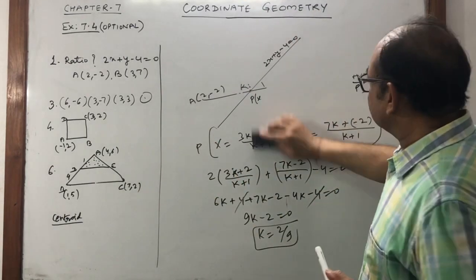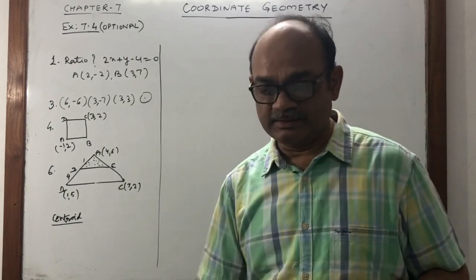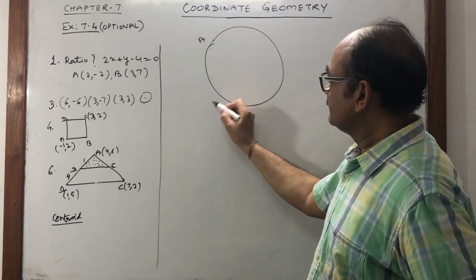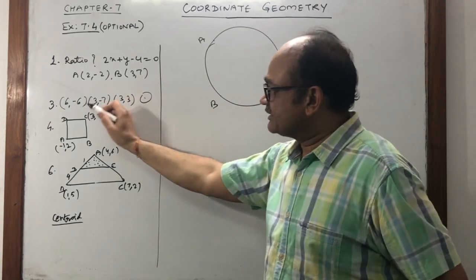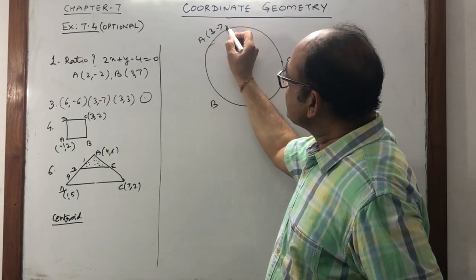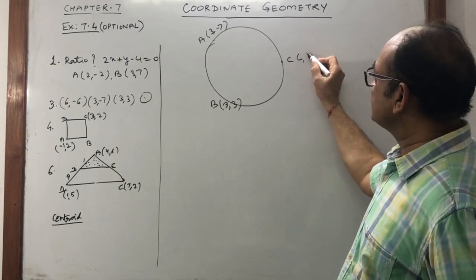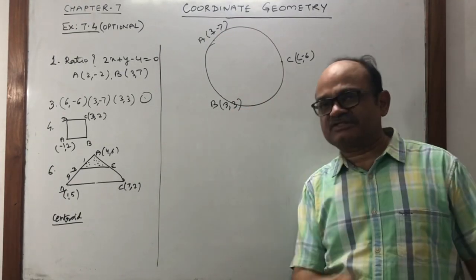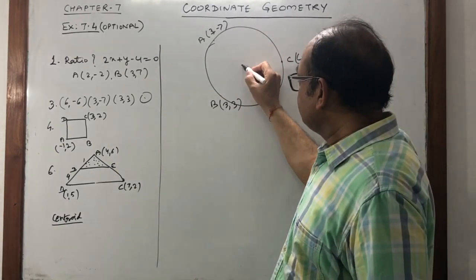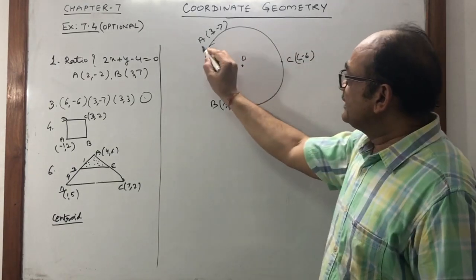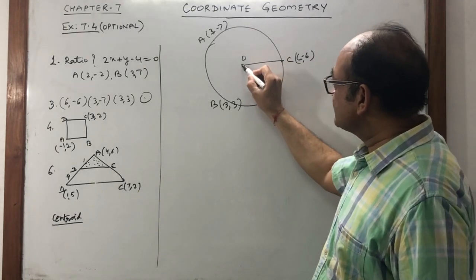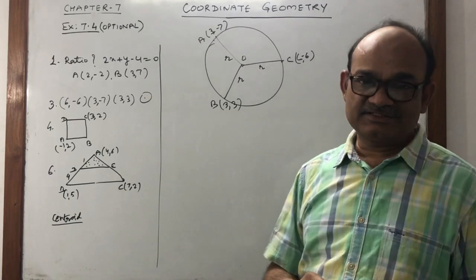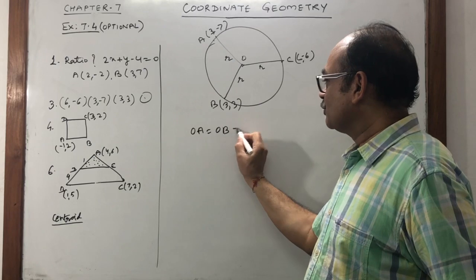Question number 3. These 3 are the points on a circle: A is (6,-6), B is (3,-7), and C is (3,3). These are points on the circumference of the circle and we want to calculate its center. The basic condition of a circle is that all three points are on the radius, and the length of radius is the same. So indirectly OA equals OB equals OC.